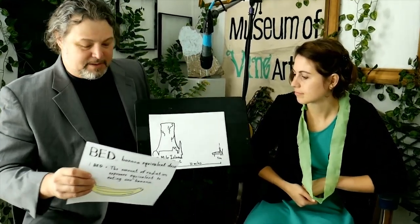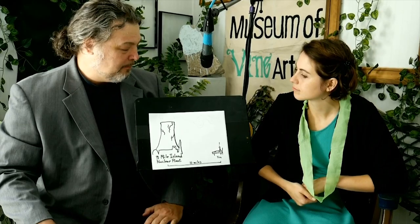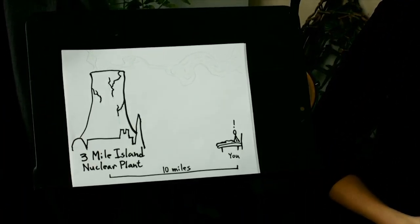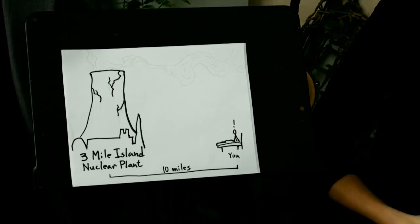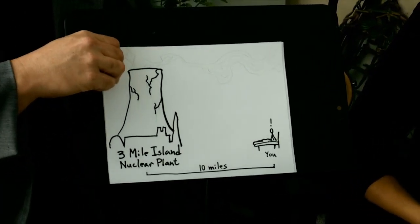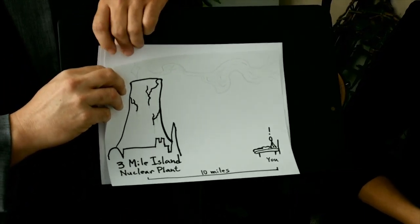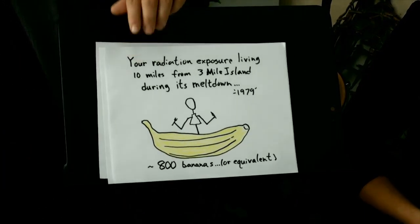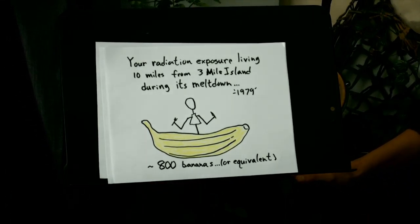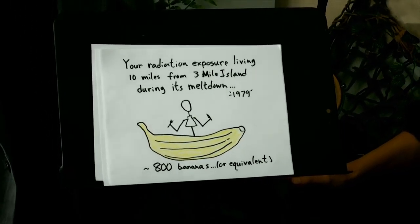Now, part of how they developed this unit of measurement was using a model scenario. Imagine that you live, say, 10 miles from the Three Mile Island nuclear power plant. And you wake up one morning to find out it's melted down. What is your radiation radioactive exposure? How dangerous is it? Well, if you had lived 10 miles away from Three Mile Island during the time that it was melting down in 1979, your radiation exposure would have added up to 800 BED or the equivalent of eating 800 bananas. That's a lot of bananas. It's a lot of bananas.